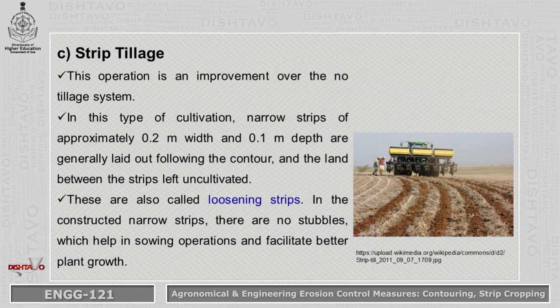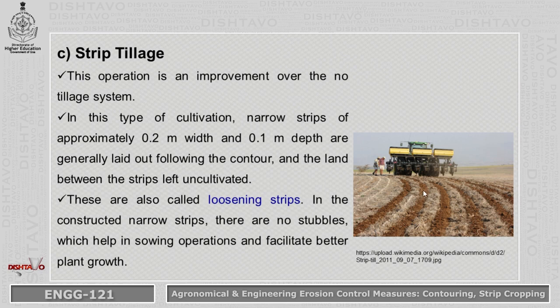Strip tillage is an improvement over the no-tillage system. Here, narrow strips of 0.2 meters (20 centimeters) width are tilled to a depth of 10 centimeters only, making it very economical. These strips, also called loosening strips, have no stubbles in the constructed narrow strips, which helps in sowing operations and facilitates better plant growth.